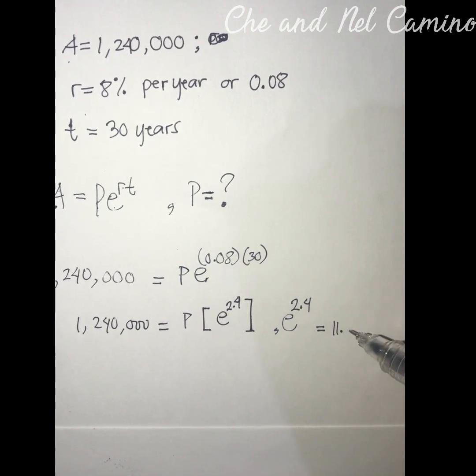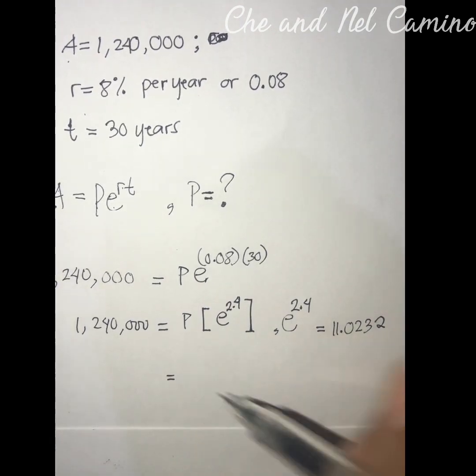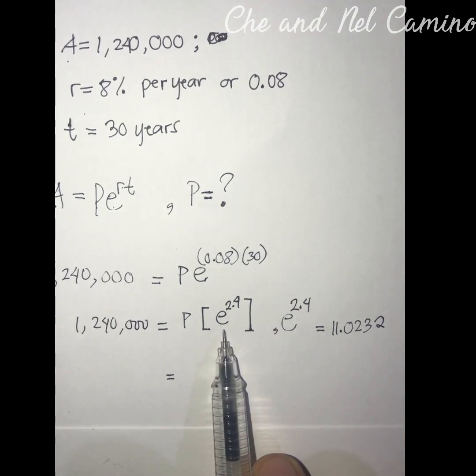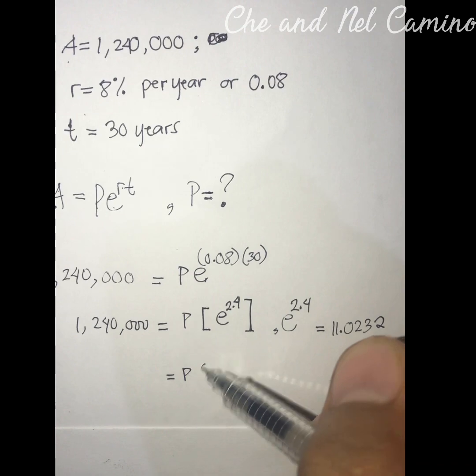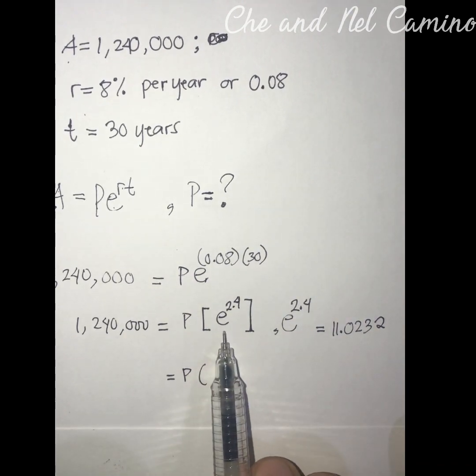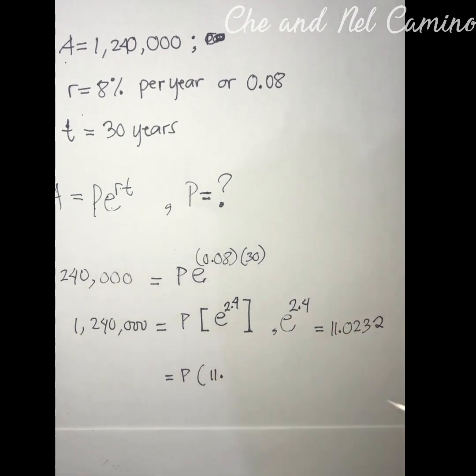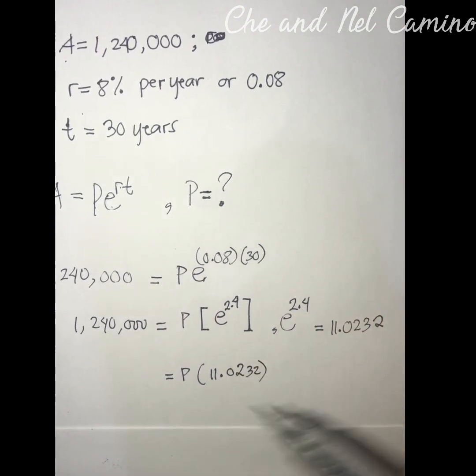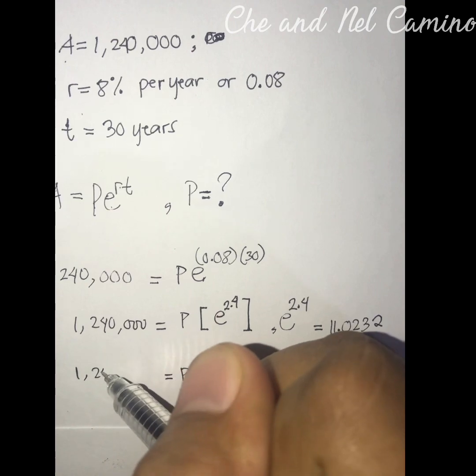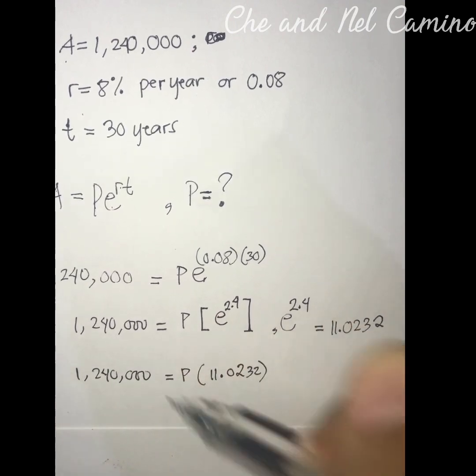11.0232. To continue, we are just going to plug in the value of this, which is 11.0232, to the next process. We have P times 11.0232.